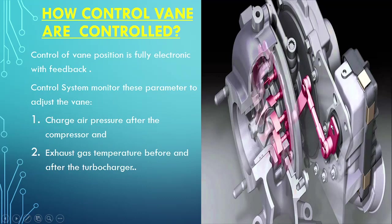How is this controlled — which parameters is it monitoring, based on which it actuates the servo motor controlling the rod? The control box, consisting of a servo motor or electric motor actuating the control rod, receives a signal from two things: one is the charge air pressure after the compressor — very important — and second is the exhaust gas temperature before and after the turbocharger. These three parameters are guiding the turbine area adjustment.